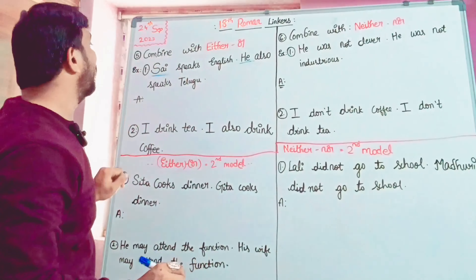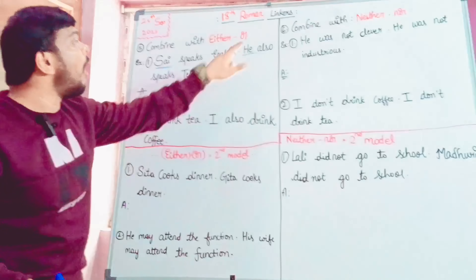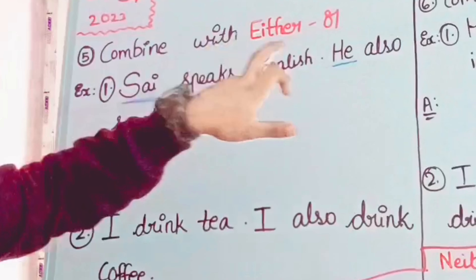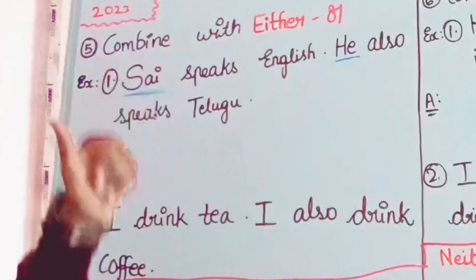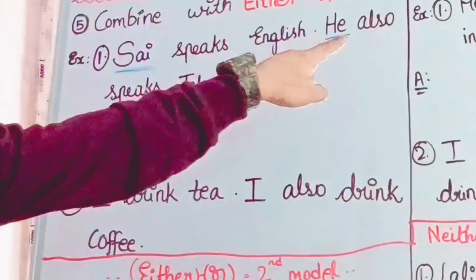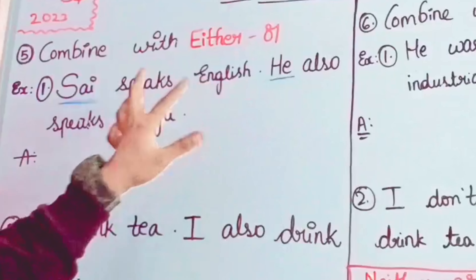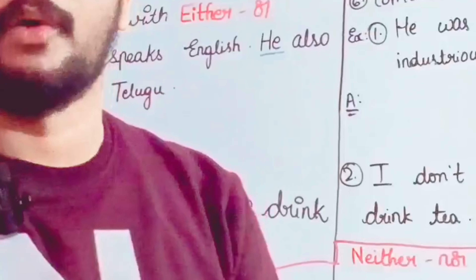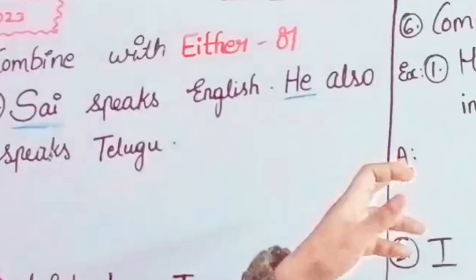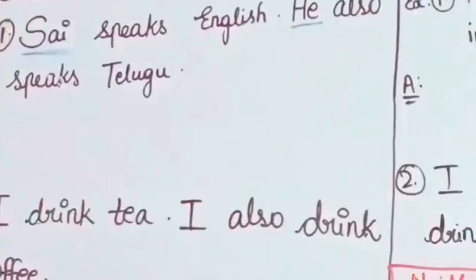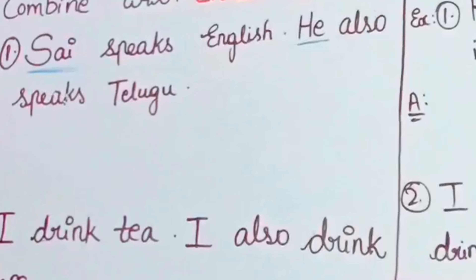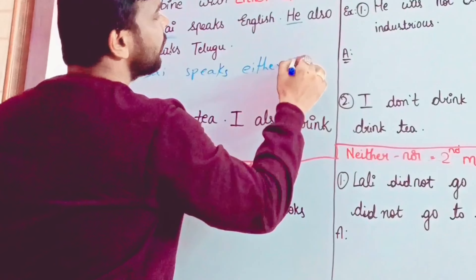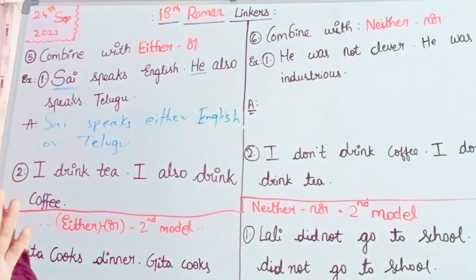If you find the first sentence, what we should do — we will do it in the same place. First sentence is subject, second sentence is subject. The verb in the first sentence is speaks — simple present tense. So in the second sentence, if it speaks, then it speaks. Subject, verb, object — subject, verb, object. This is subject, this is verb, this is object.